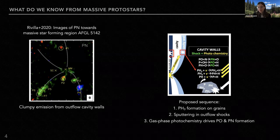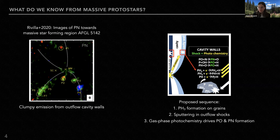This chemical sequence begins with the formation of phosphine on the grains, then the sputtering of phosphine into the gas, followed by photochemical dehydrogenation to form PH or atomic phosphorus. In the gas phase, reactions between P or PH with oxygen first form PO, and then PO subsequently reacts with nitrogen to form PN. That is the picture in the literature for why PN and PO are emitting within these outflow shocks.